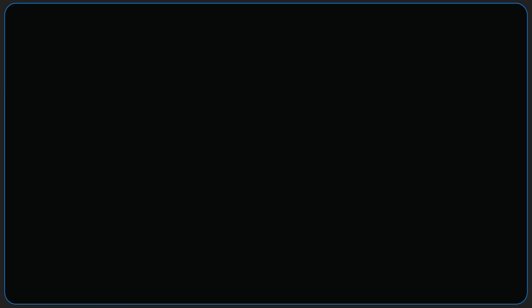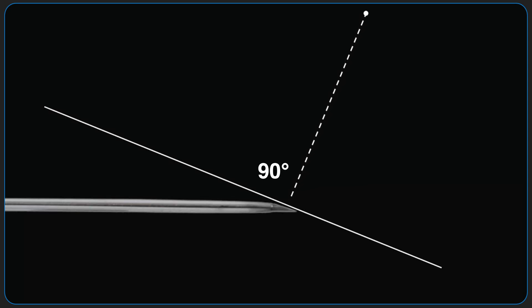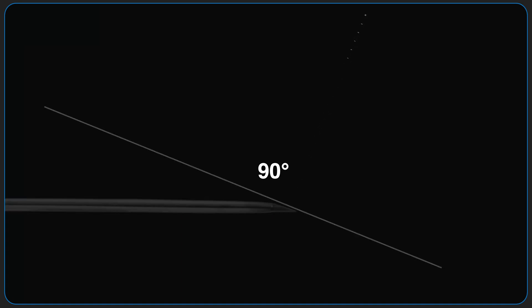As the needle tip is located right next to the bevel, clear visualization of the bevel allows definitive and dynamic location of the needle tip in tissue. In order for the bevel of the needle to act as a specular reflector, it needs to be placed perpendicular to the direction of the ultrasound beams coming from the transducer.